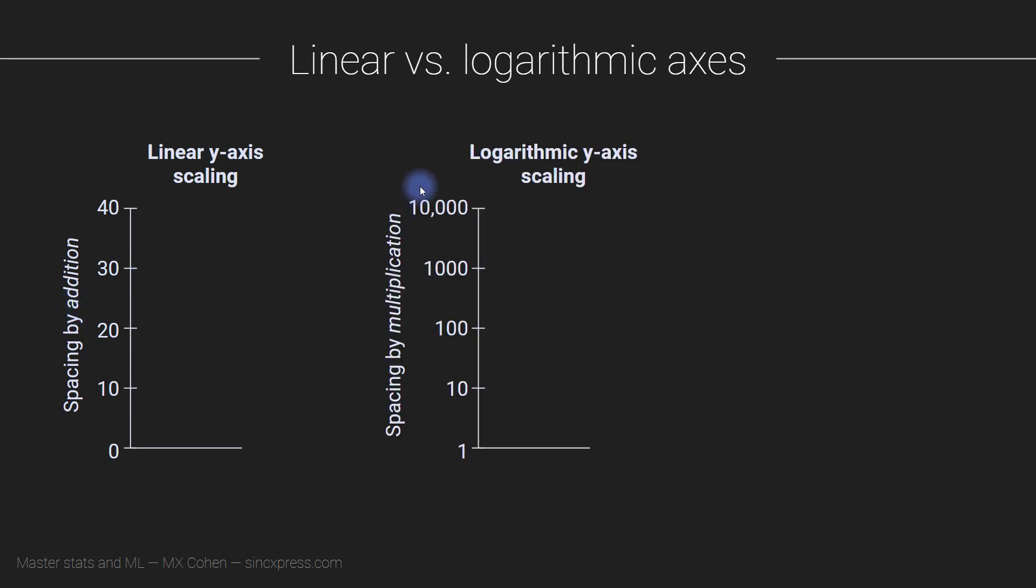Now let's think about logarithmic y-axis scaling. We have a similar plot except the ticks are no longer defined by addition. We don't get them by summing the same number. Instead we get them by multiplying by the same number. In this case I'm multiplying by 10. So we start off at one times 10 is 10 times 10 times 10 times 10, we end up with 10,000.